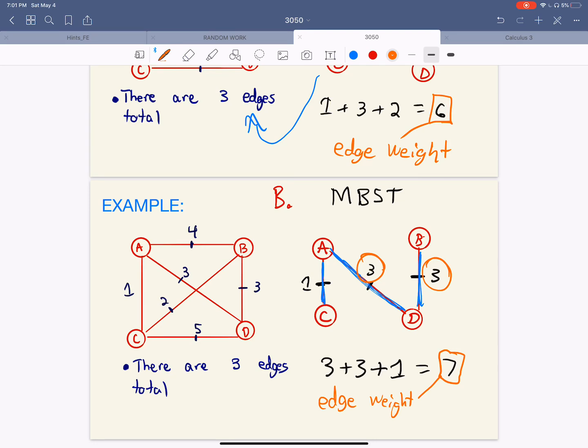But the weights are different. So it's worse. But that is a bottleneck spanning tree. Because you use threes at the end of it instead of the two, but you still have the same amount of edges.